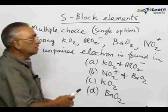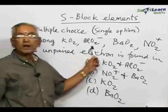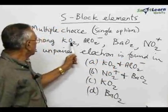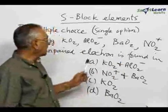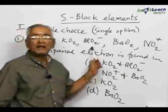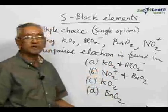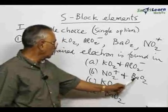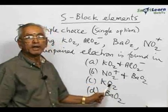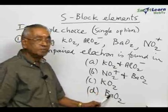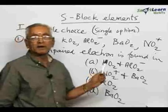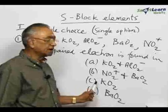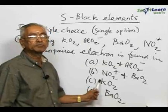The first question asks: among the various species AlO₂⁻, BaO₂, NO₂⁺, and KO₂, in which compound is an unpaired electron found? The four choices are KO₂, AlO₂⁻, NO₂⁺, BaO₂, and KO₂. KO₂ is known as potassium superoxide. The correct answer is KO₂, potassium superoxide, which contains an unpaired electron.